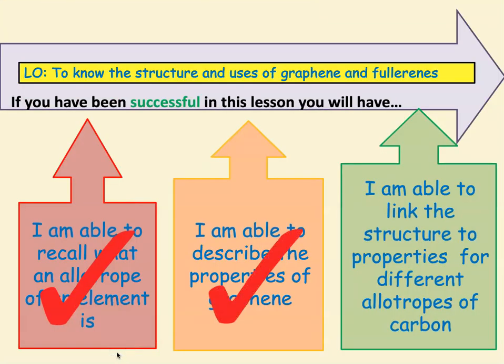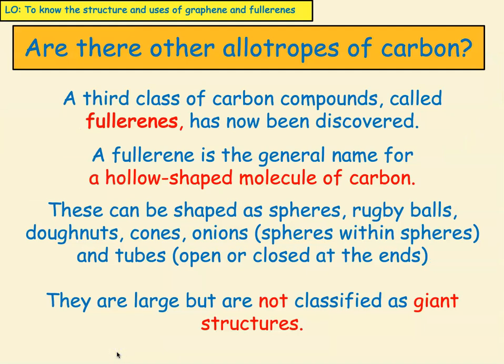We are now able to describe the properties of graphene. Let's have a look at some more allotropes of carbon. There is a third class of carbon compounds we need to know for our exam, and they are called fullerenes. A fullerene is the general name for a hollow shaped molecule of carbon. Those shapes can be spheres, rugby ball shaped, doughnuts, cones, onions — which are spheres within a sphere — and tubes that can be either open or closed at the end.